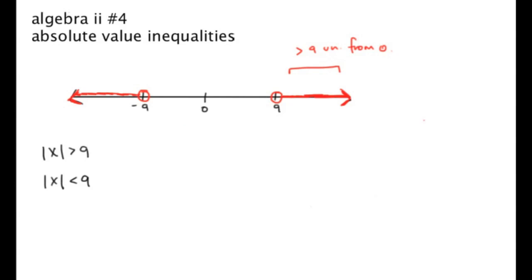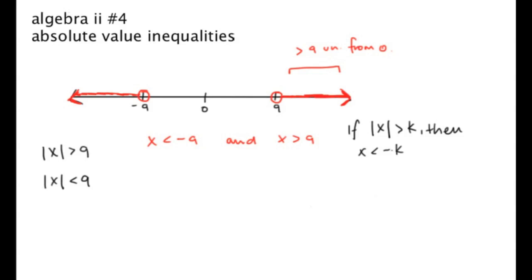In numerical equation format, that is: x is less than negative 9, and x is greater than positive 9. Now let's make a rule: if the absolute value of x is greater than some number k, then x is less than negative k and x is greater than positive k. That is our rule, and memorizing it would help. It's common sense, so if you ever forget it you can always just work it out on the number line.